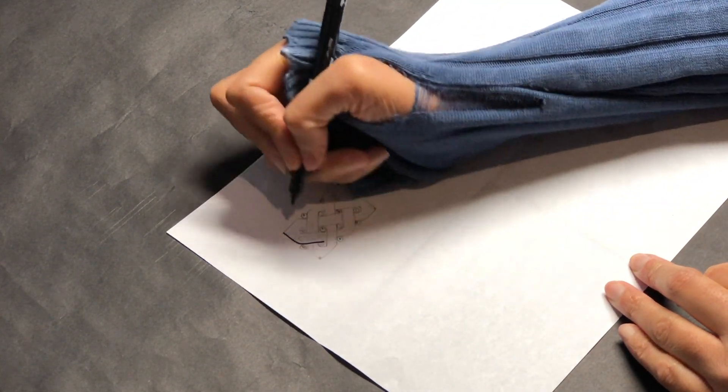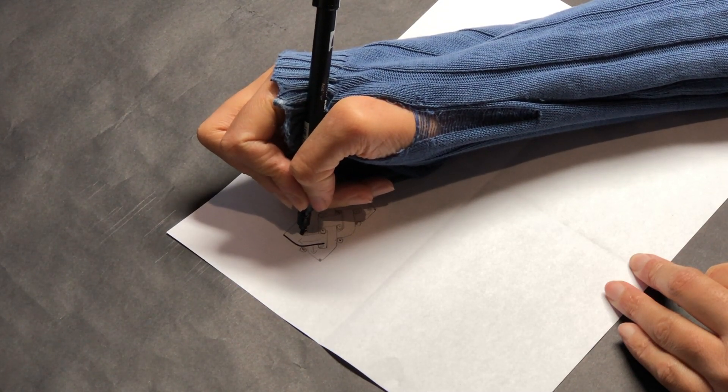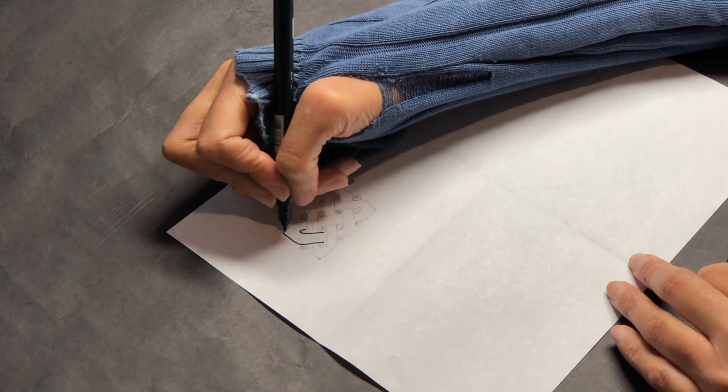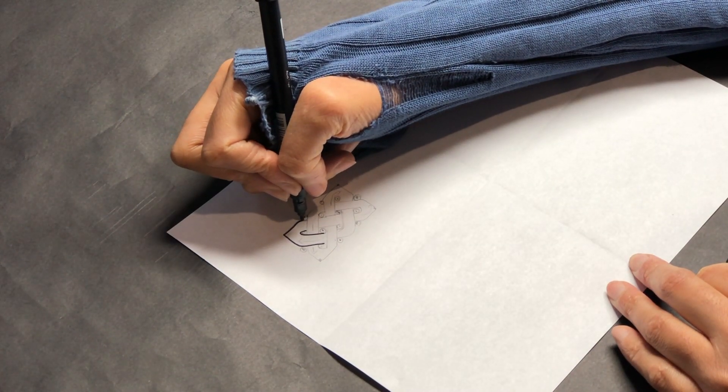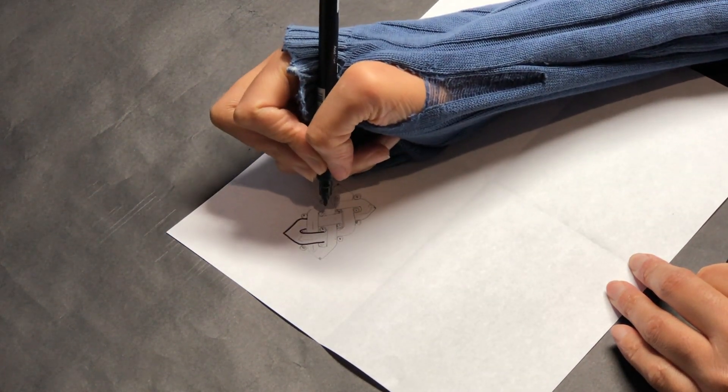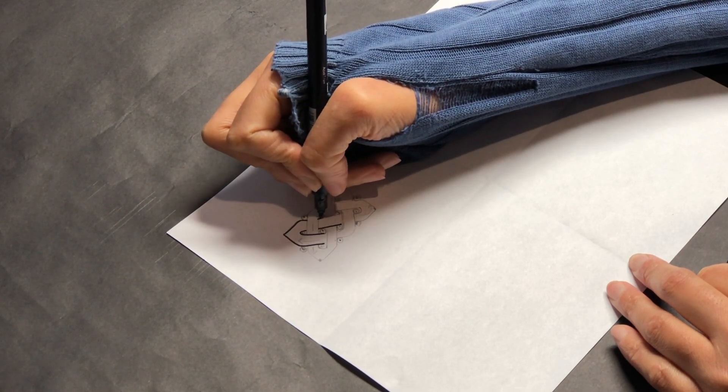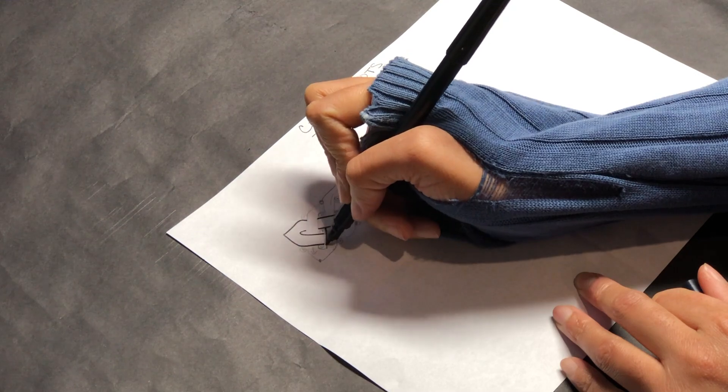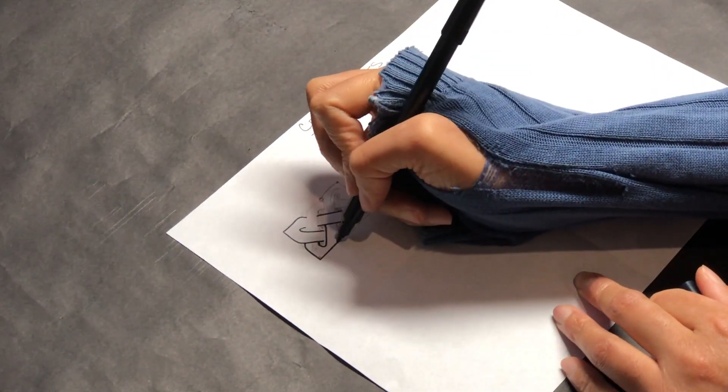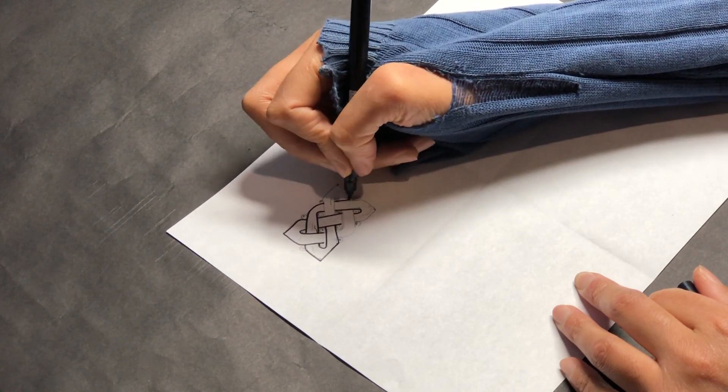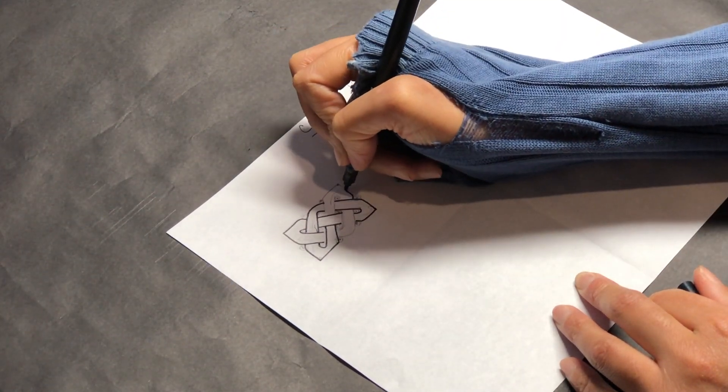Using a pen or a soft graphite pencil, go over your lines to define your pattern. I recommend turning your paper so that you can easily trace over your work. I haven't moved mine so I can make it easy for the camera.